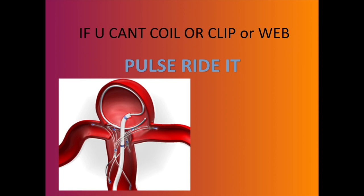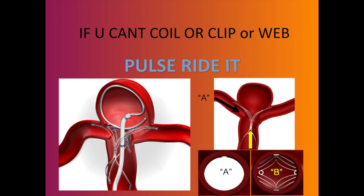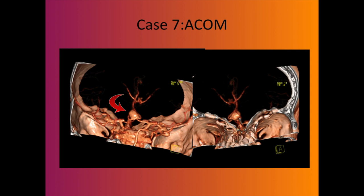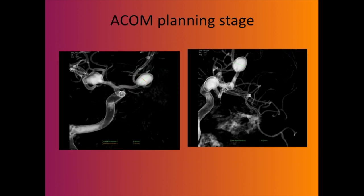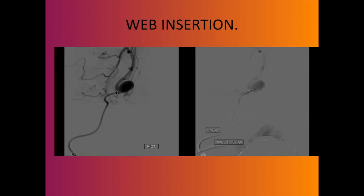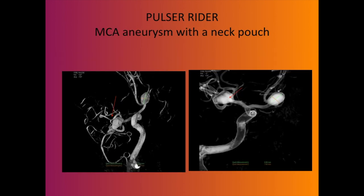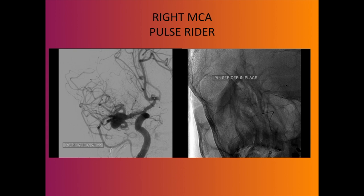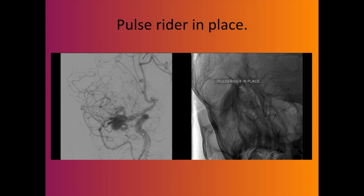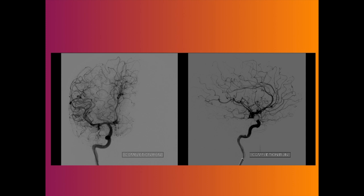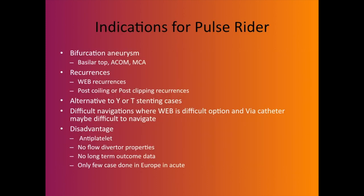If you can't coil, clip, or WEB, there is another device called the PulseRider — a neck bridging device with a metal end, so not a true intrasaccular device. You can go through the device and coil the aneurysm. Here is a case with an ACoM aneurysm and an MCA aneurysm together — one looks suitable for WEB, the other does not. So you drop a WEB into the first aneurysm, then deploy a PulseRider across the MCA aneurysm, go inside, and coil it — the result looks pretty good.